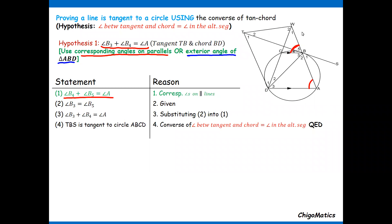Starting from there, you look at the expression itself. I don't need B5; what I need is B3. So the next step is to check how B5 is related to B3. We are given that B3 equals B5 — that information is given — so I simply substitute and arrive at the hypothesis I wanted to show. Then I can conclude that TBS is tangent to circle ABCD using the converse theorem.